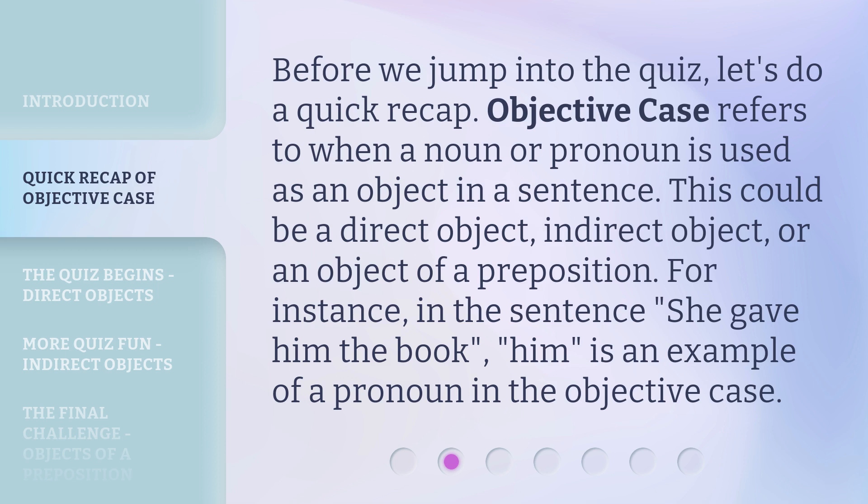Before we jump into the quiz, let's do a quick recap. The objective case refers to when a noun or pronoun is used as an object in a sentence. This could be a direct object, an indirect object, or an object of a preposition. For instance, in the sentence 'she gave him the book,' 'him' is an example of a pronoun in the objective case.